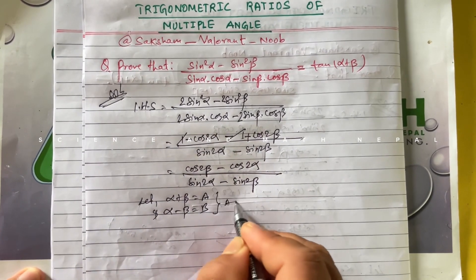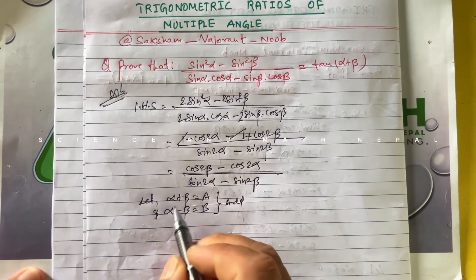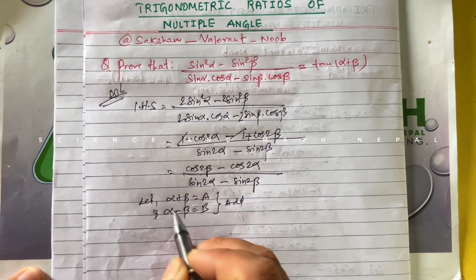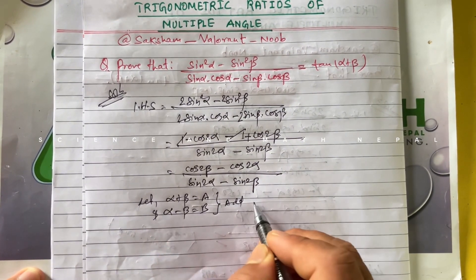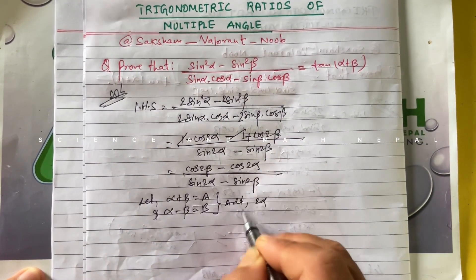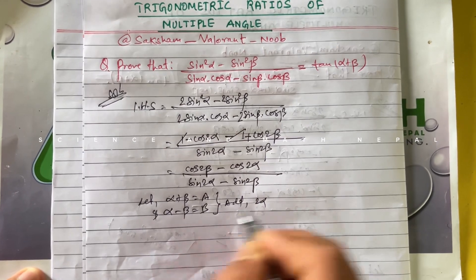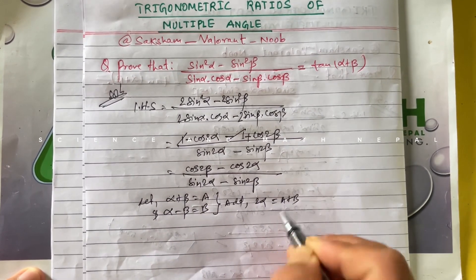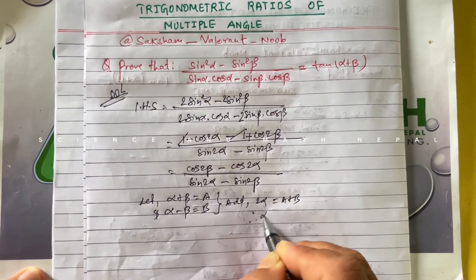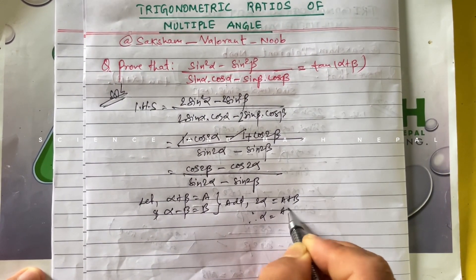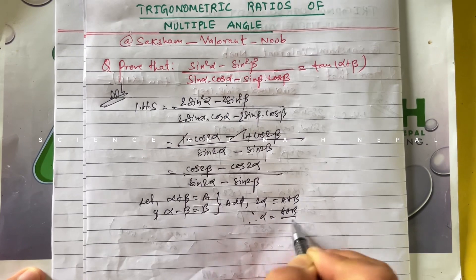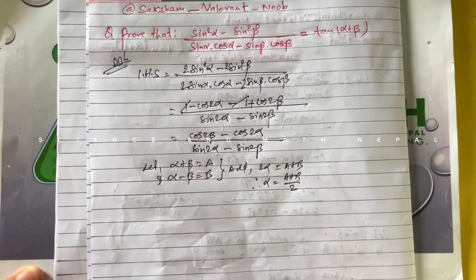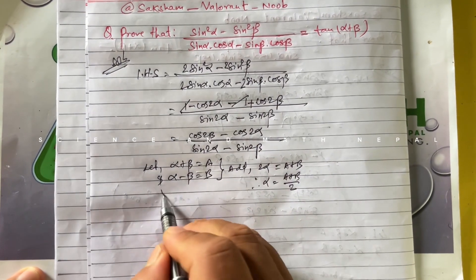If we add the two equations, the β and -β cancel, so 2α equals a + b on the right side. Therefore we get α = (a + b) / 2.